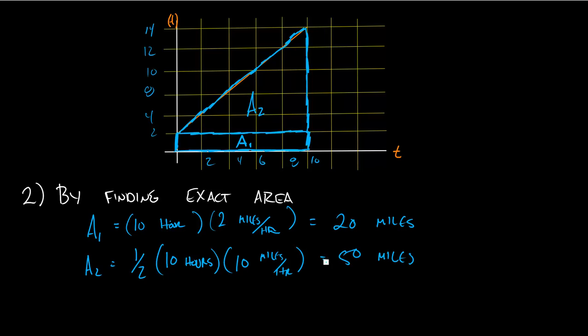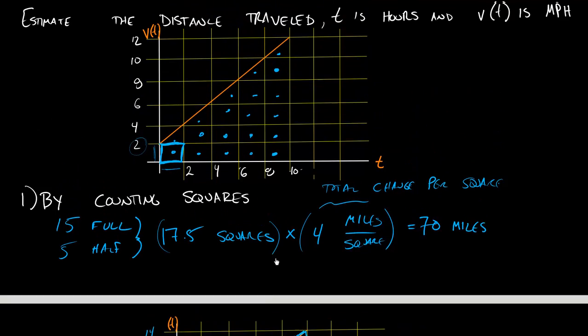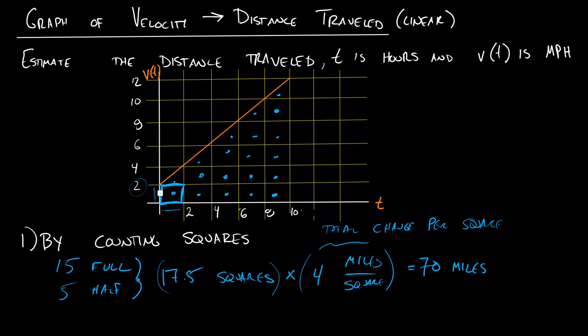I end up getting the same answer as last time. A1 plus A2 is a total distance of 70 miles. But this way is much more reliable because you're always using exact areas. The big idea from this section is if you have a curve that represents your velocity, the way you can get the distance traveled is just by finding the area underneath that curve.